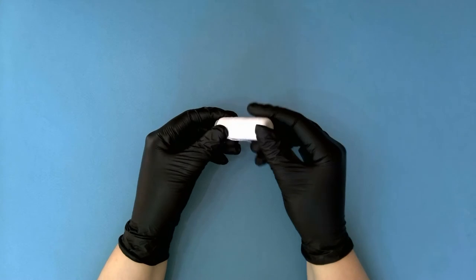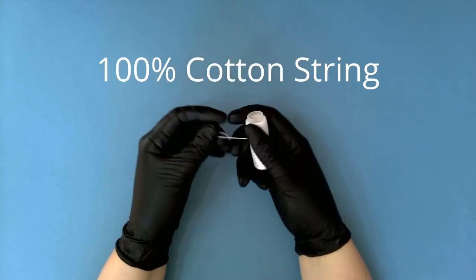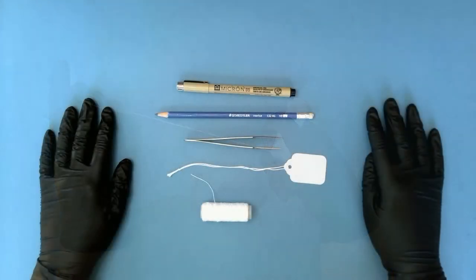If the tags you bought don't come with string or you need more to tie on an object, get some 100% cotton string or something like cotton twill tape will do.